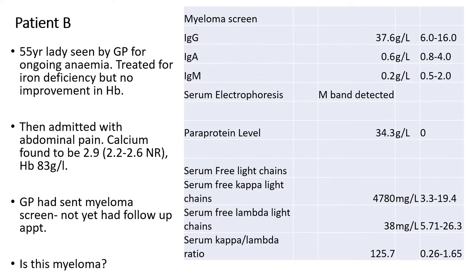Look at the immunoglobulins themselves. The IgG is very high at 37.6, but the IgA and IgM are both very low. An M band has been detected with a paraprotein of 34.3, so we know there's a clonal paraprotein. The serum free light chains are also completely abnormal — kappa shows a high level, lambda is pretty normal in comparison. So this is kappa restriction. The kappa-lambda ratio is 125, suggesting a clone of cells all pumping out kappa light chains.